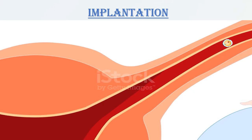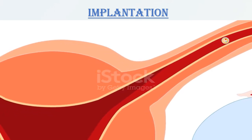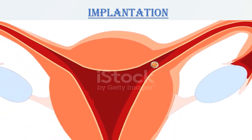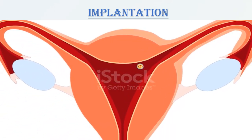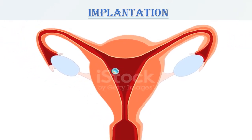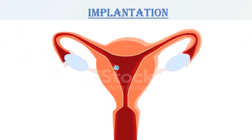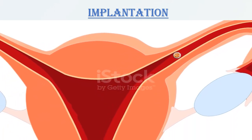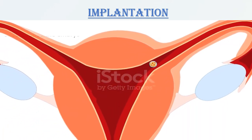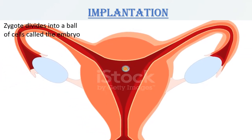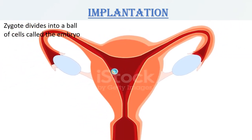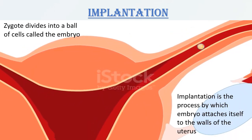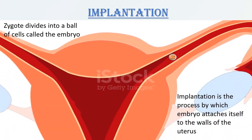After fertilization has taken place, the zygote divides itself to form more cells as it travels down the oviduct, and it becomes a ball of cells called the embryo. Once in the uterus, the embryo will attach itself to the thick, soft lining of the uterus. So, the zygote divides itself into a ball called the embryo, and then the embryo attaches itself to the thick lining of the uterus.